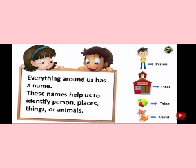For example, if everything has the same name, we will not be able to recognize it. This is why every thing has a different name. For example, there is a child named Ali. If all the children's names were Ali, we would not be able to recognize them. This is why every child has a different name.